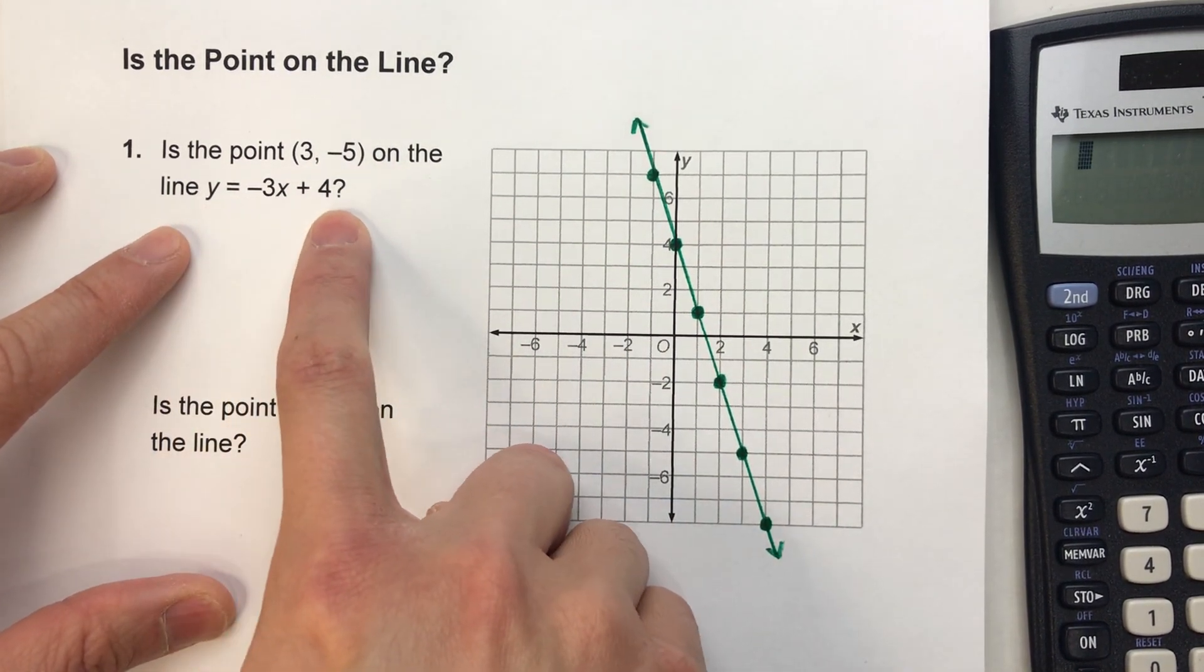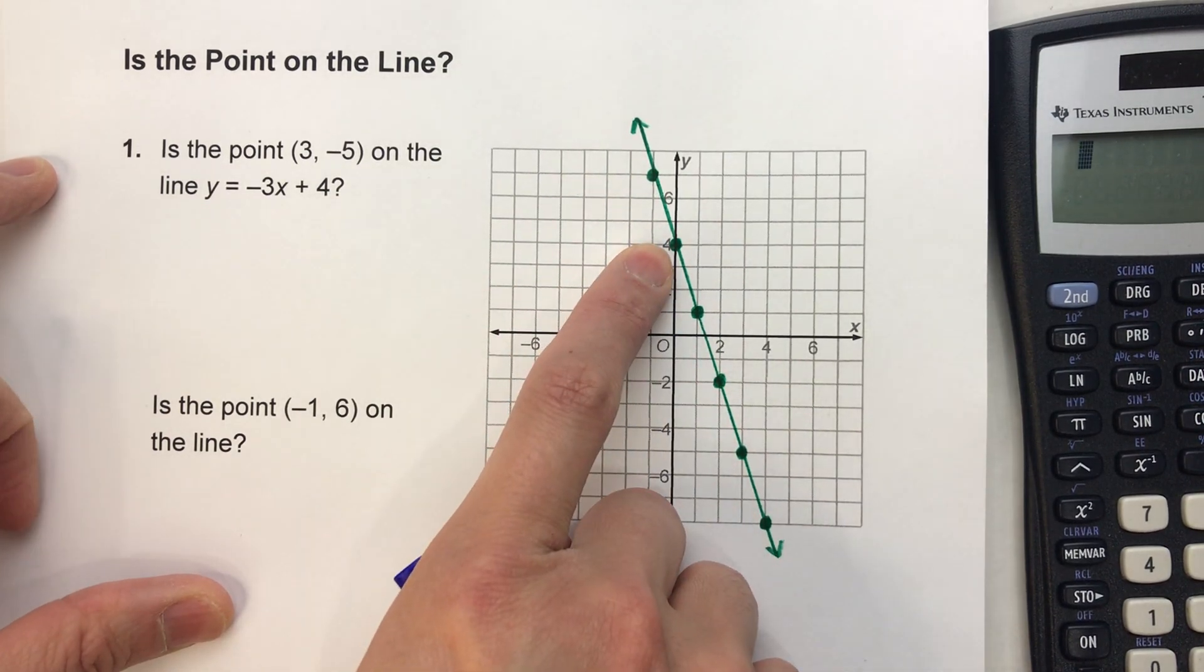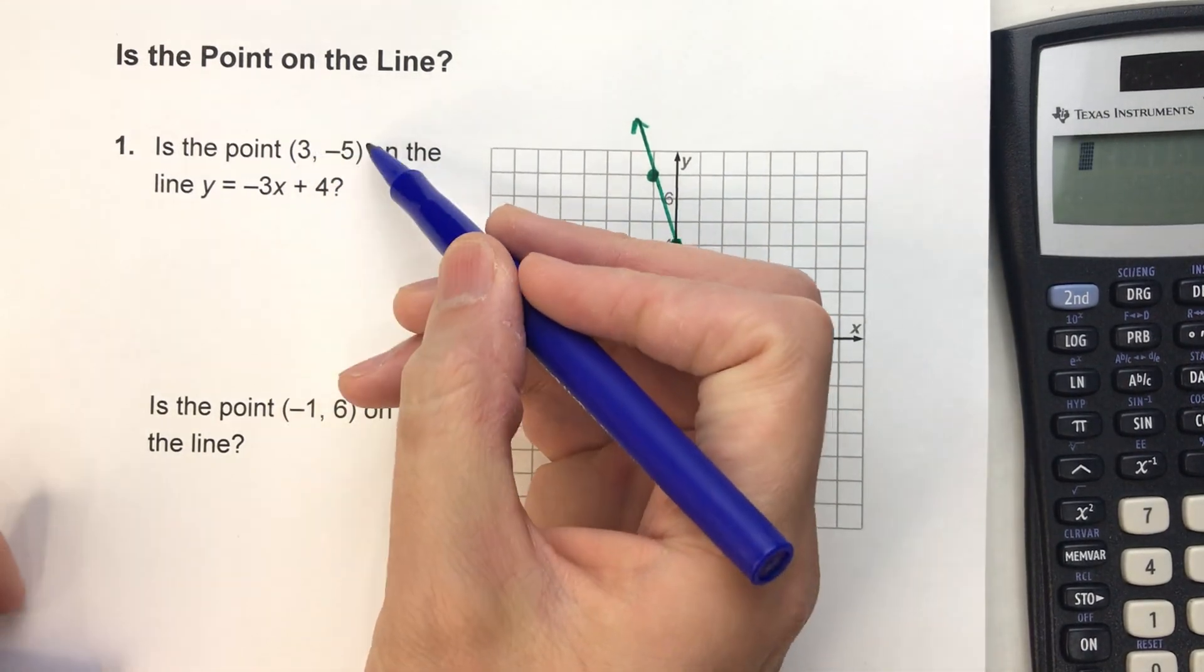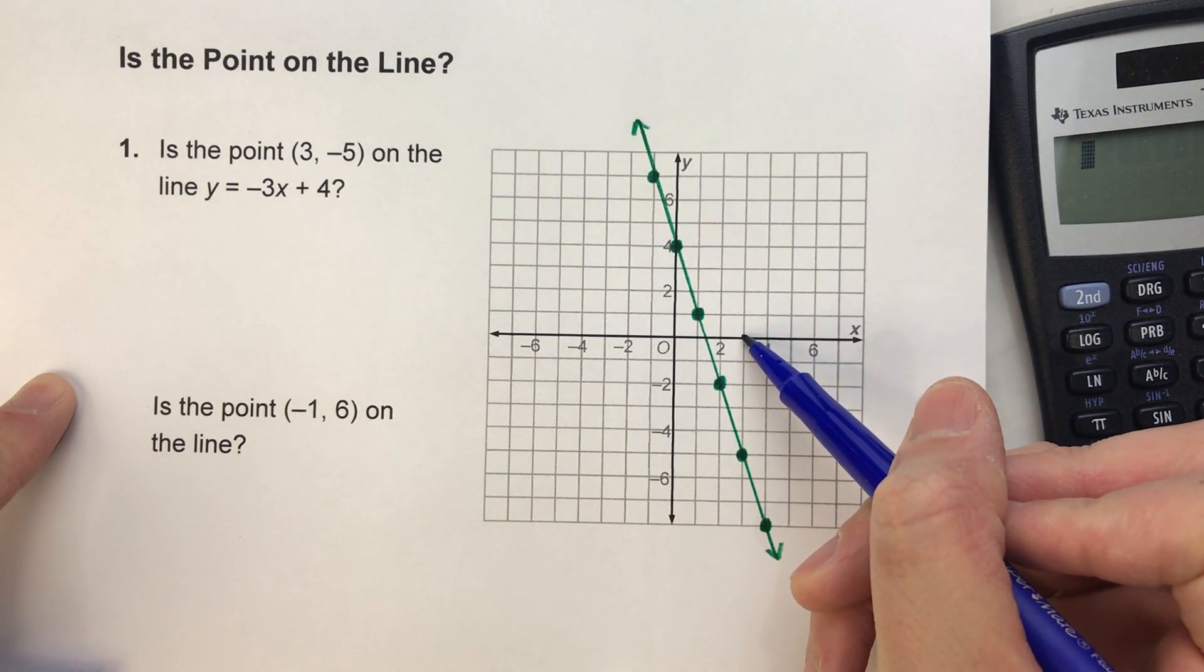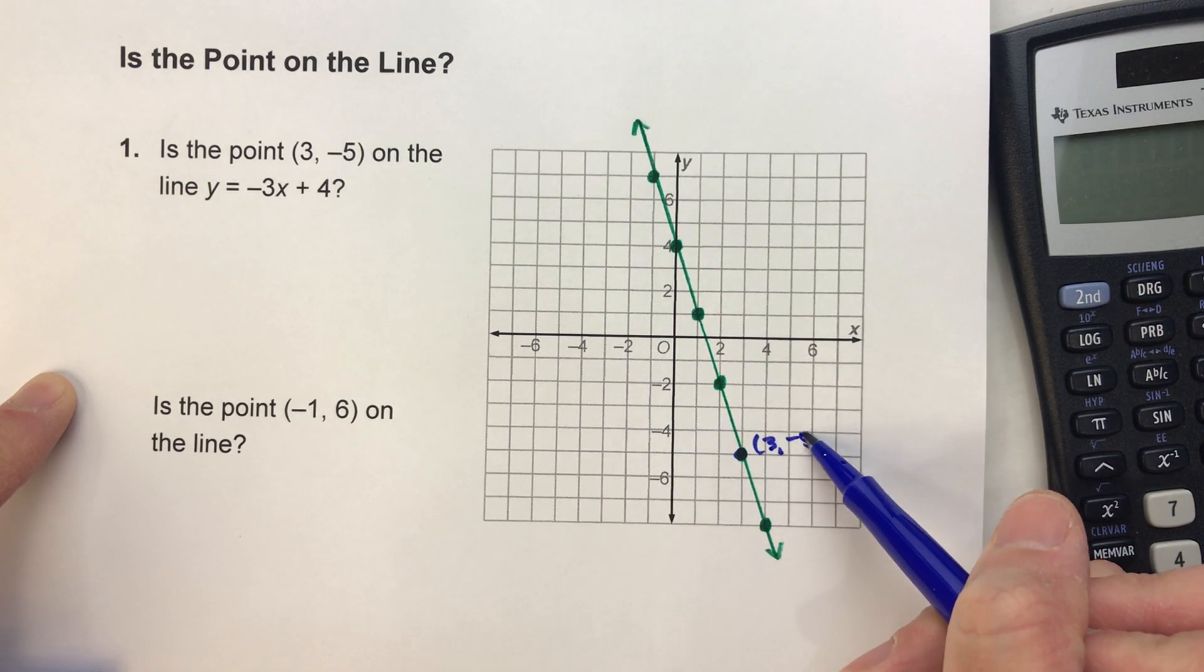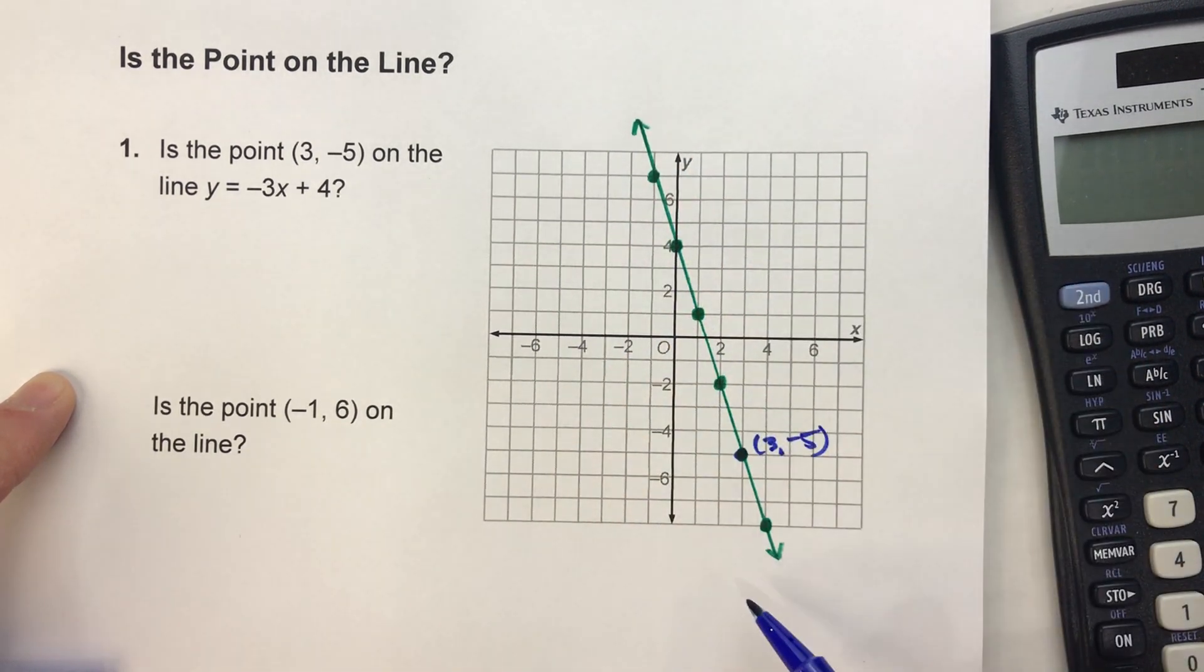Is the point (3, -5) on the line y = -3x + 4? Now the easiest way to determine this is if you just make the graph of the line and then check to see if the coordinates are on that line. So y = -3x + 4 is shown over here. Here's my y-intercept of 4, my slope of -3, and this point (3, -5), x is 3, y is -5, that's right here. And notice, yeah, it is on that line.